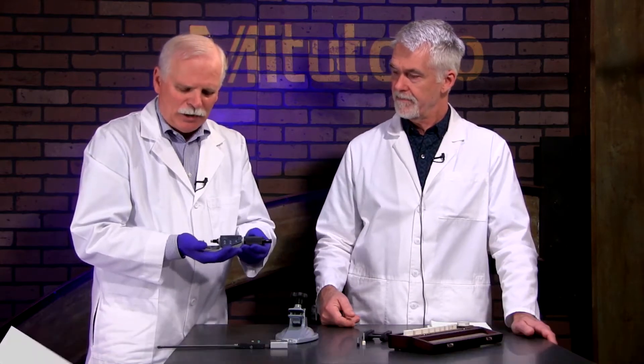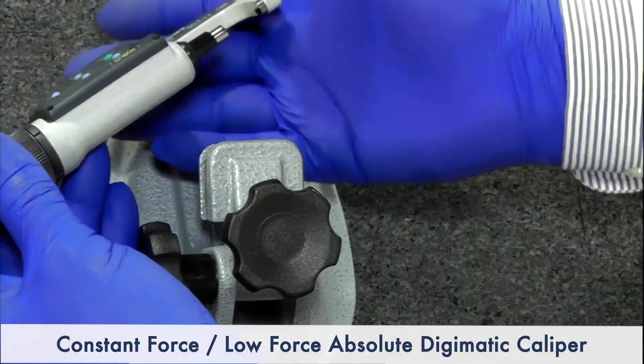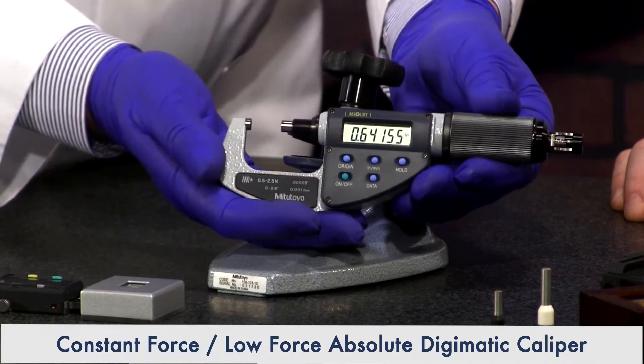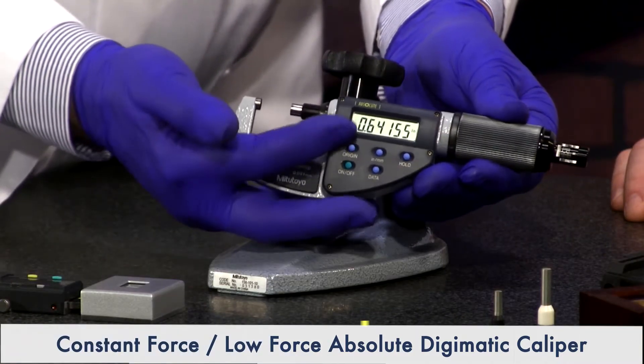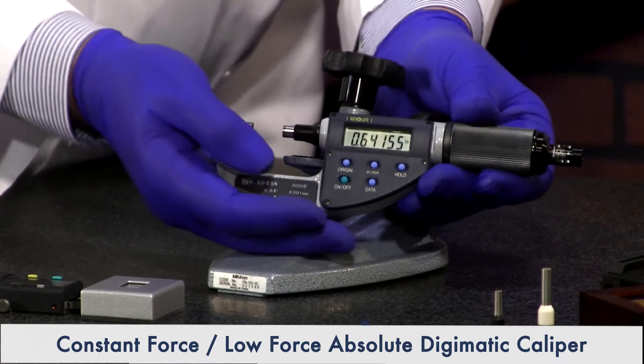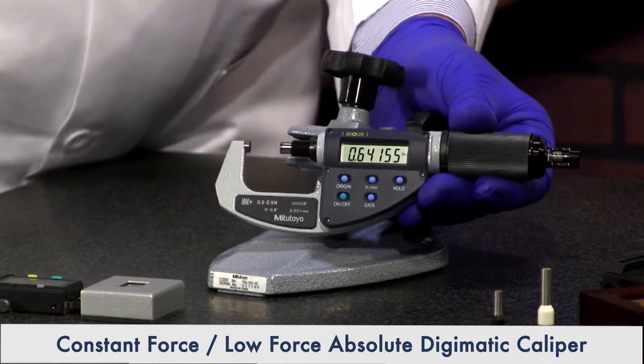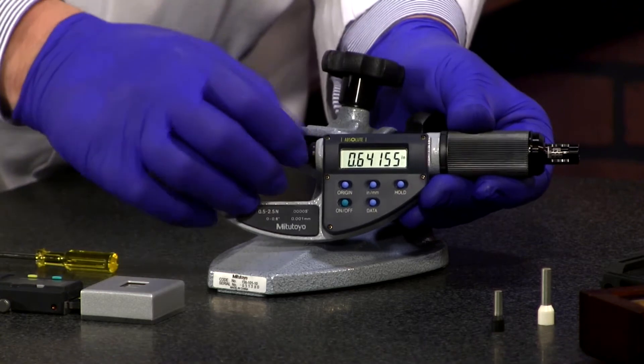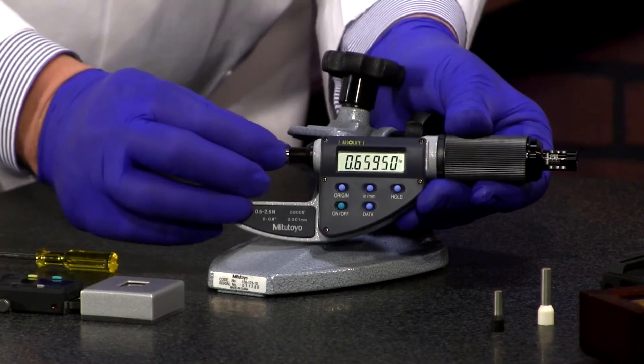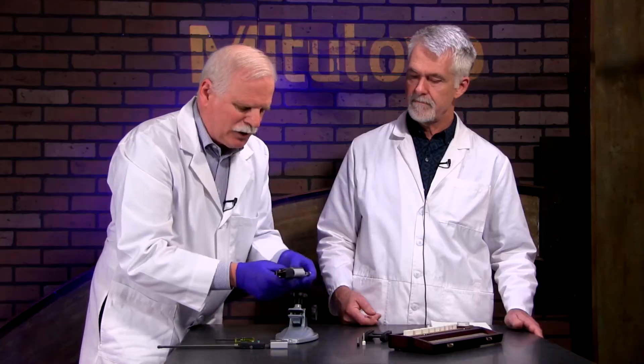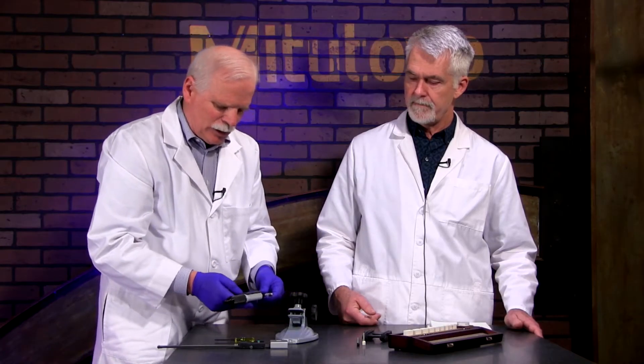The first one I'm going to show you is provided by Mitutoyo. It's a low force OD micrometer. You'll notice it resolves out to 50 millionths of an inch. Now it has this low force feature out here in the tail stock, and that is adjusted with the screwdriver. You'll adjust it to different forces. It's a spring loaded spindle. Let's get it on the gauge stand where I can show you a little better.